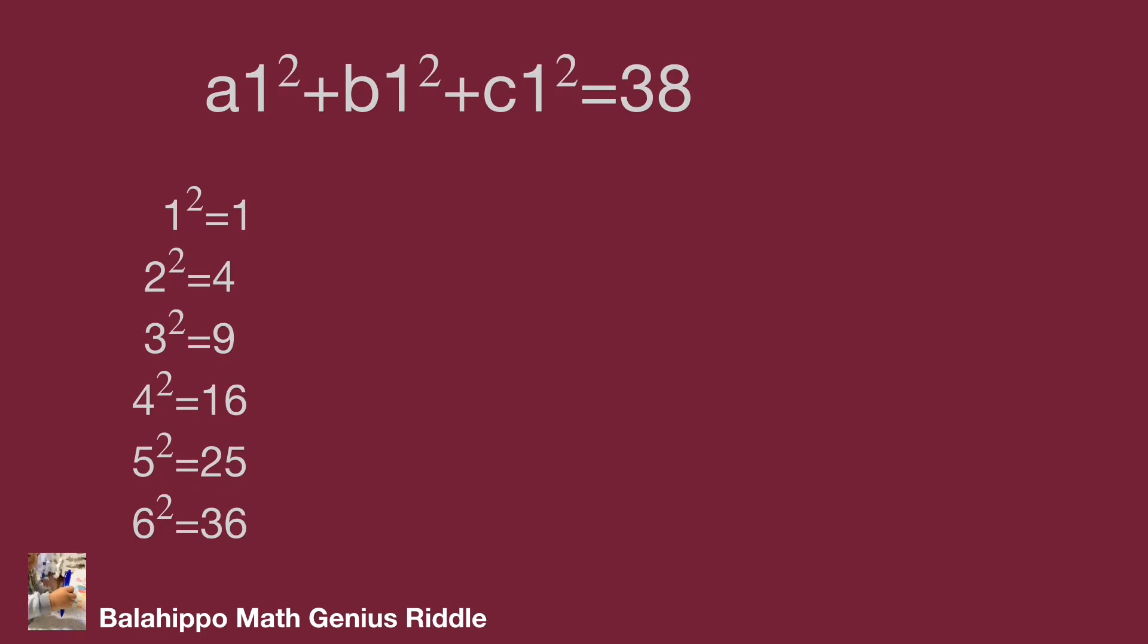Fortunately, we find 4, 9 and 25. The sum of 4, 9, 25 equal to 38. Modify the equations as 2² + 3² + 5² equal to 38.